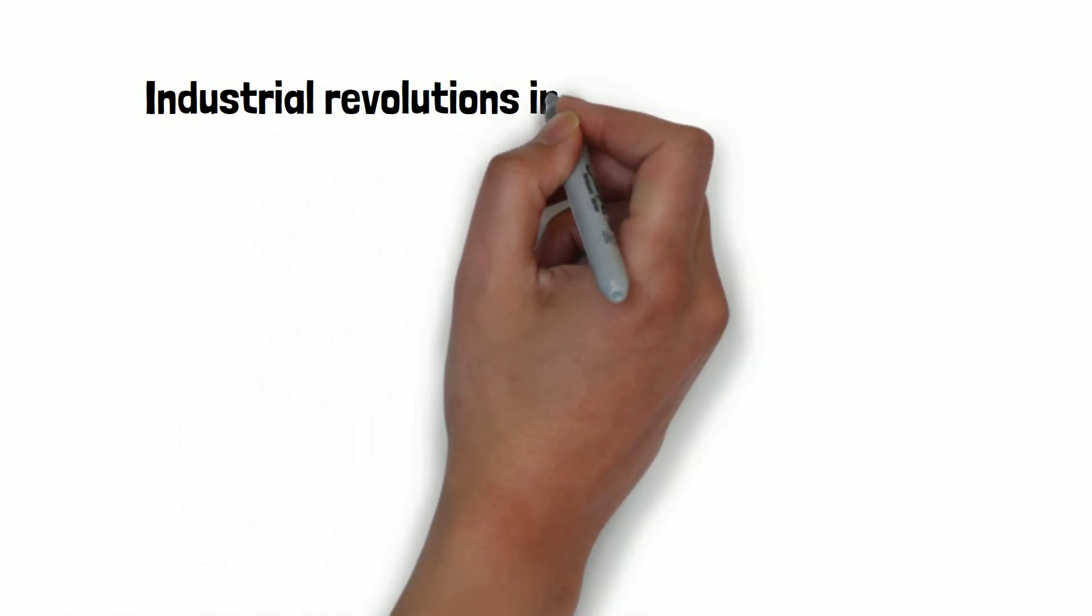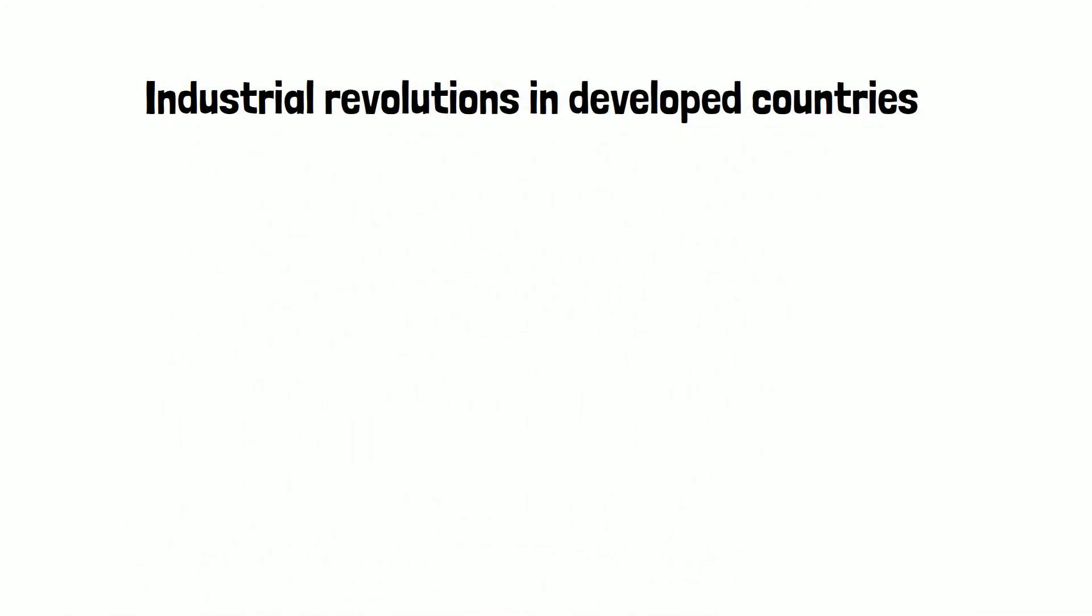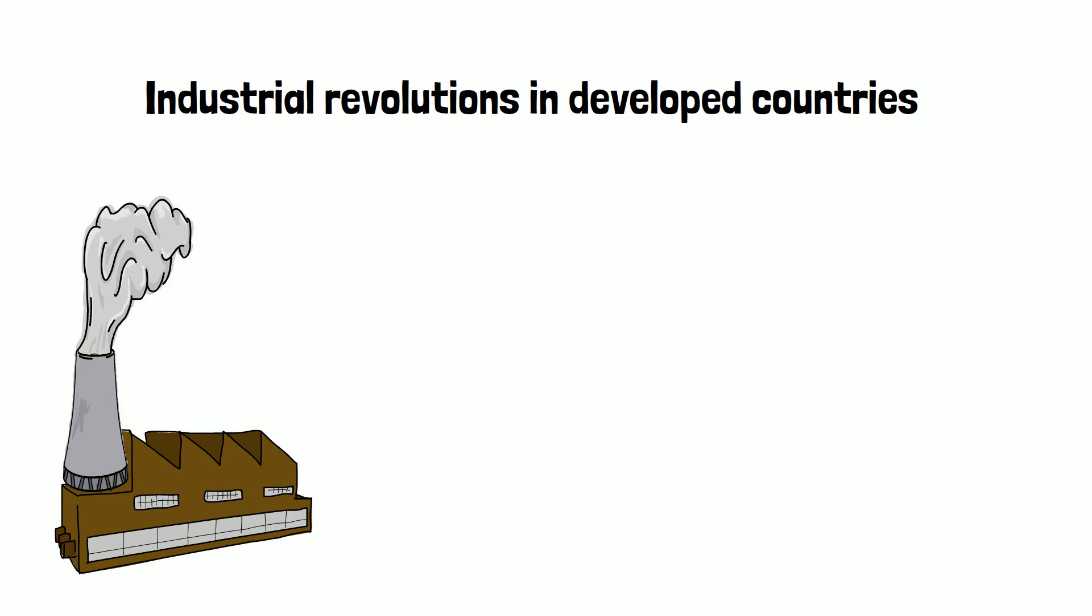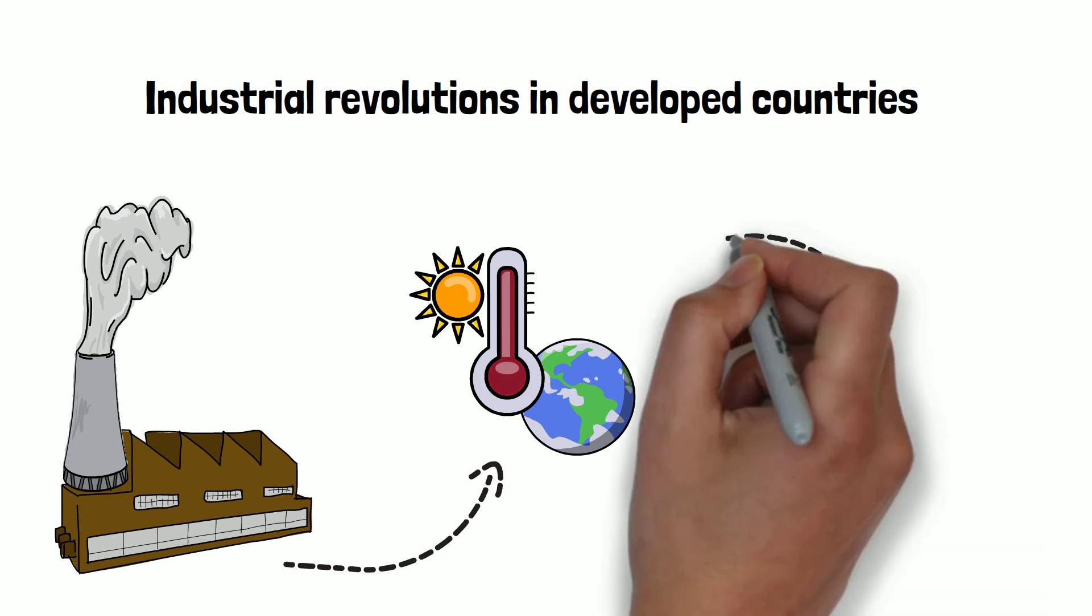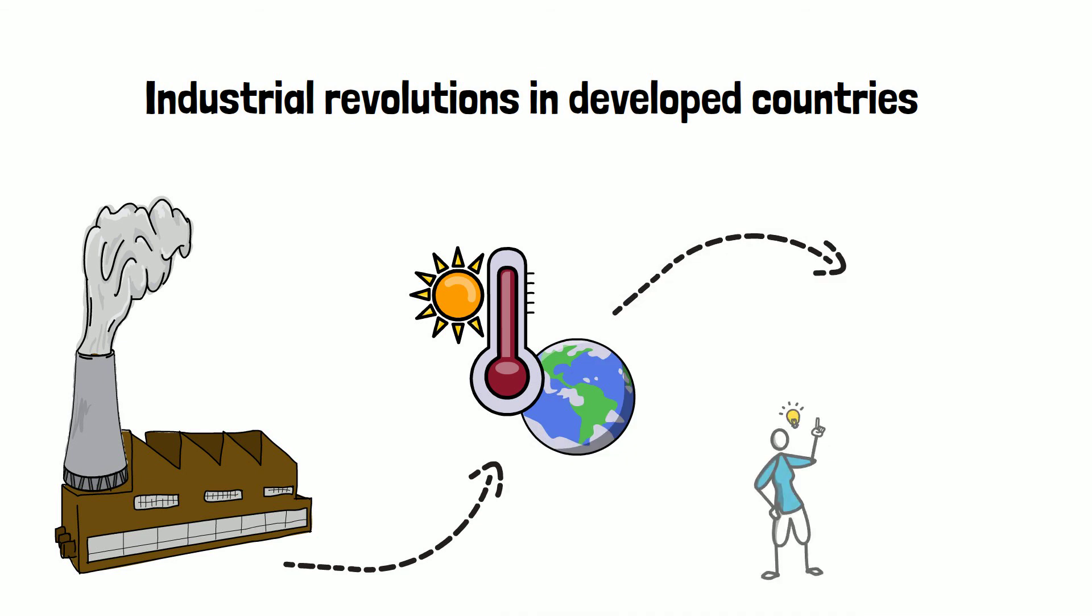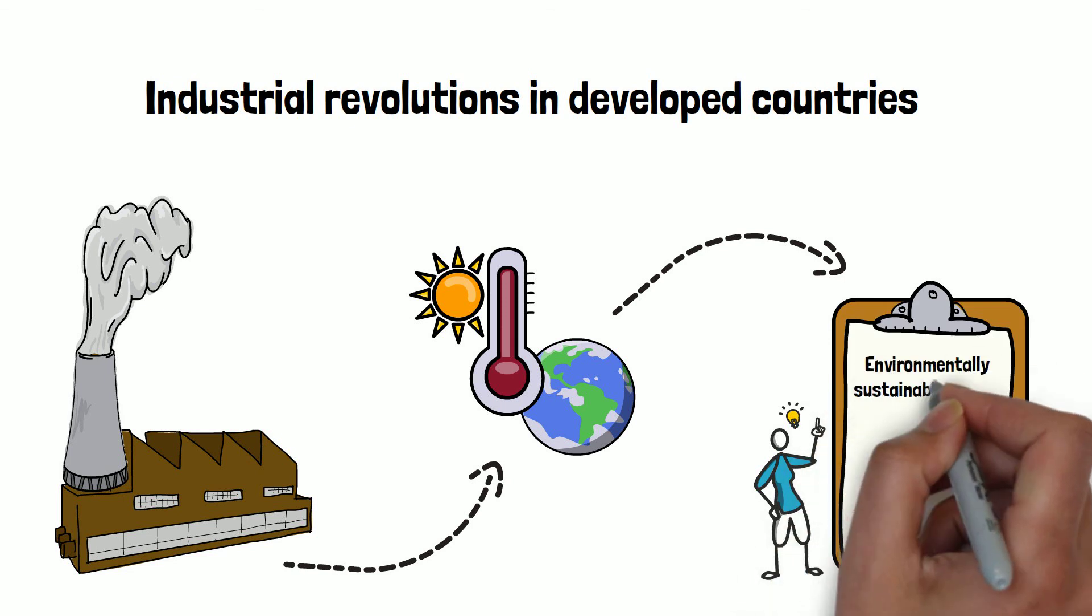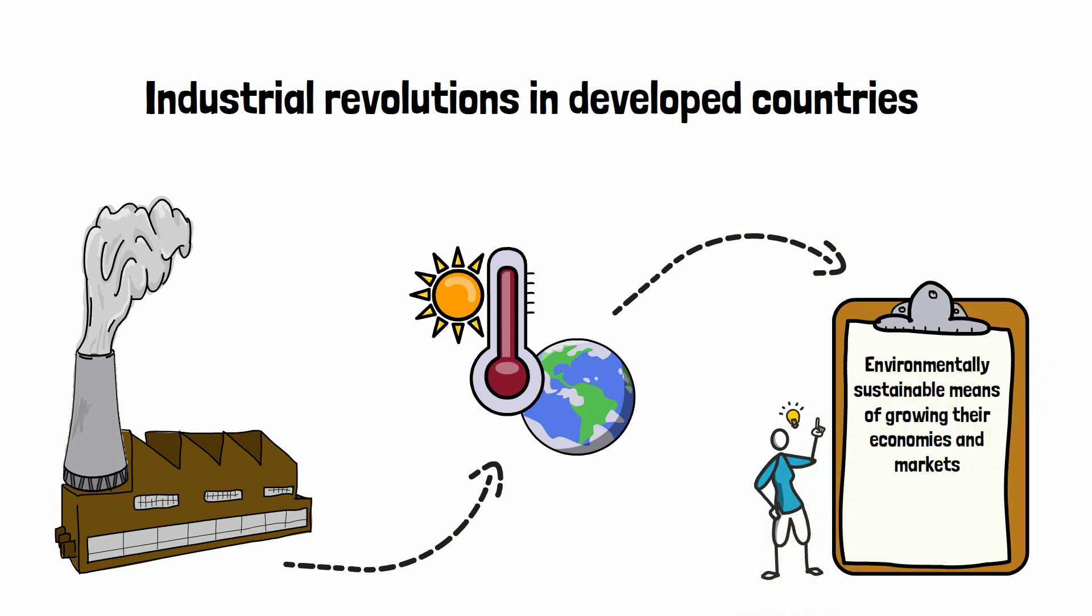It is important to remember that the so-called developed countries got to where they are through intensive industrial revolutions, which caused many of the environmental problems we face today. Whilst development programs in industry bring many great benefits, we still need to acknowledge the need to protect the climate, so we must work with these countries to find and enact environmentally sustainable means of growing their economies and markets.